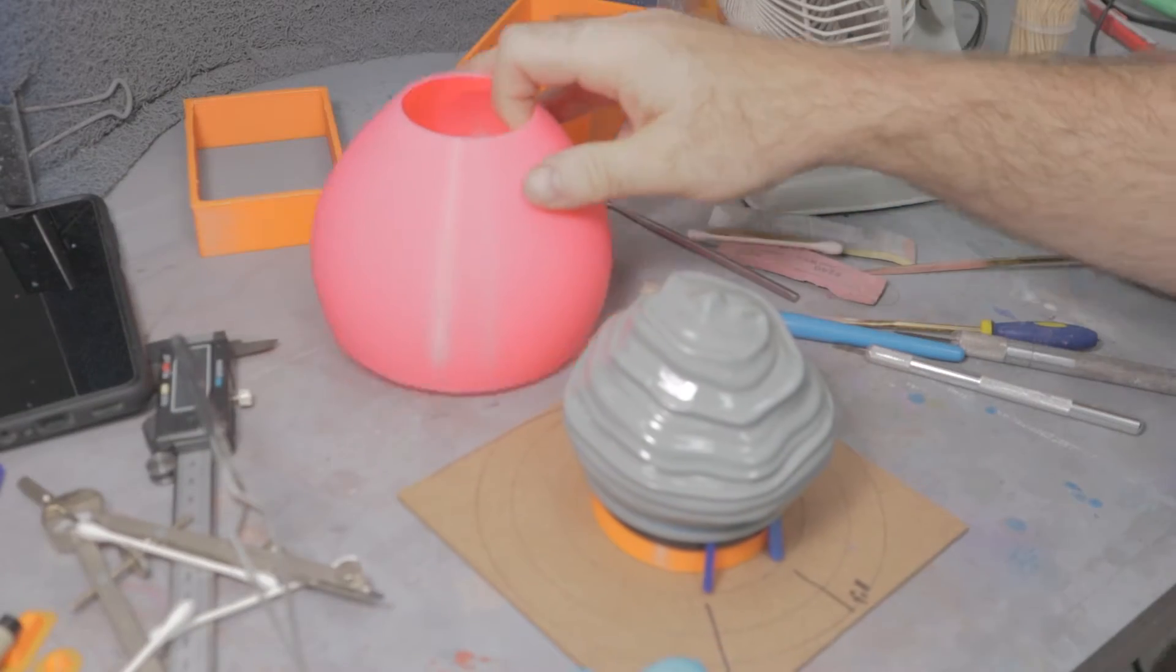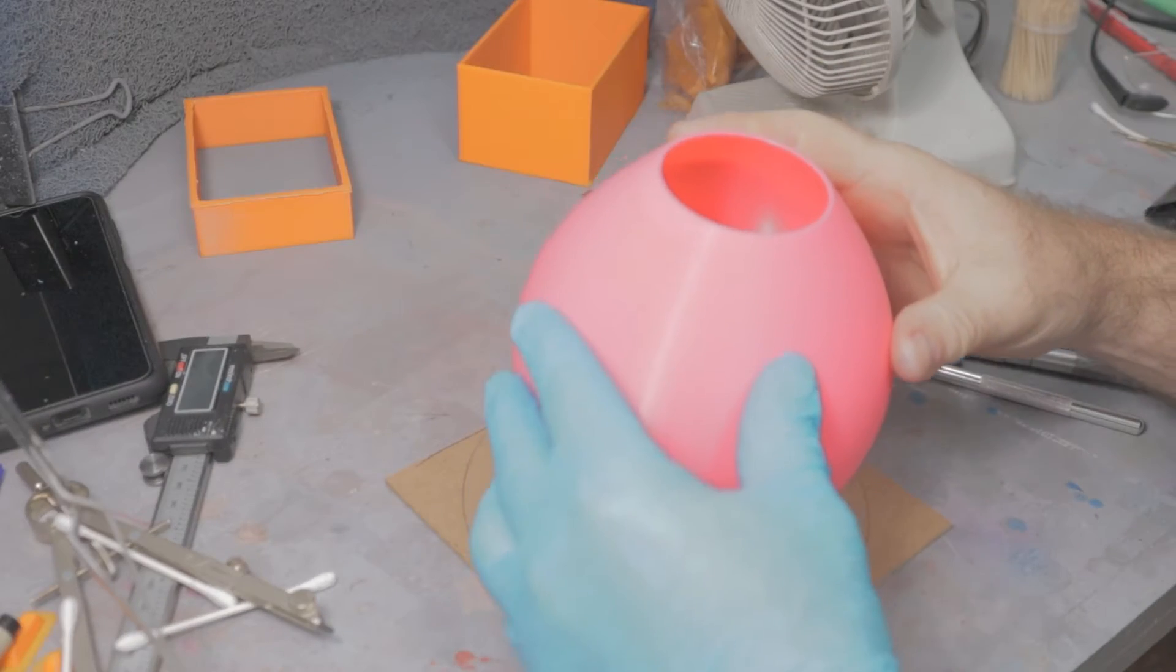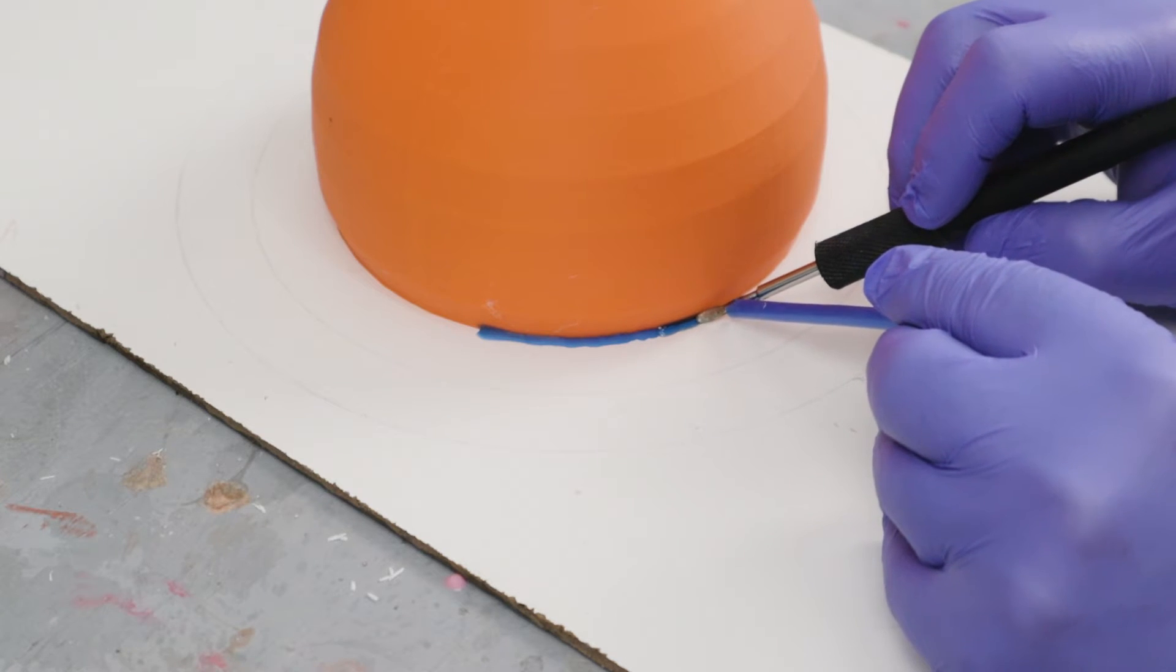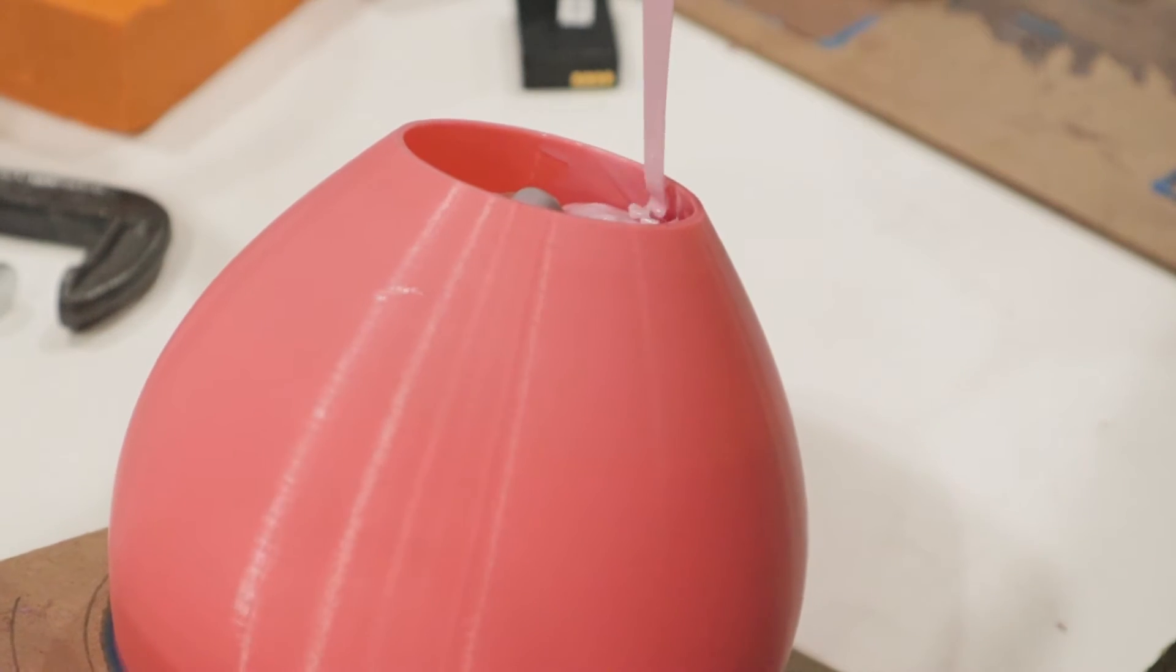I attach the mold master to a sheet of 1/8 inch thick masonite using sticky wax. Using sprue wax, which I get from eBay and a wax pen, I seal the bottom of the print against the masonite. Then I fill it with silicone of my choice, in this case it's Smooth On's Mold Max 30, and wait for it to cure.